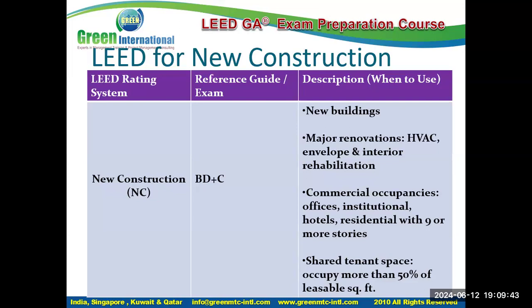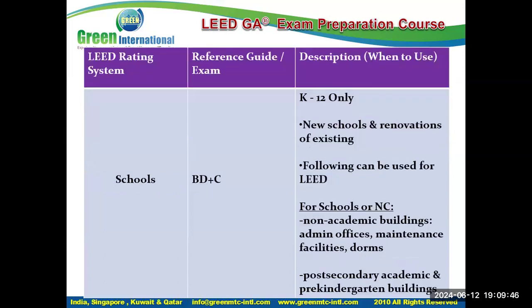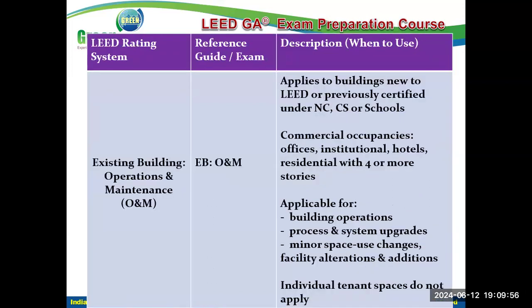To define which rating system applies, the project team must select the rating system and justify their choice. You need to justify why you are calling it new construction or home, and then submit the documentation accordingly.